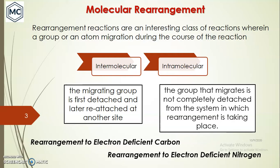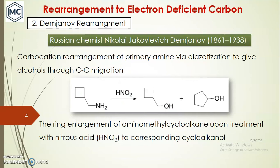There are many types of rearrangement — for example, rearrangement to electron-deficient carbon, rearrangement to electron-deficient nitrogen, or to electron-rich oxygen. In the previous lecture we already discussed Wagner-Meerwein rearrangements. The second category is the Demjanov rearrangement, discovered by Demjanov, a Russian chemist. This is a carbocation rearrangement.